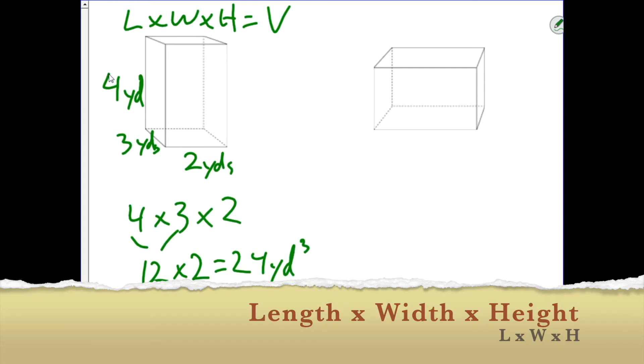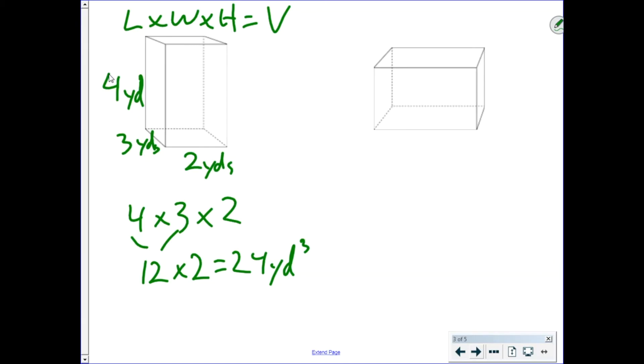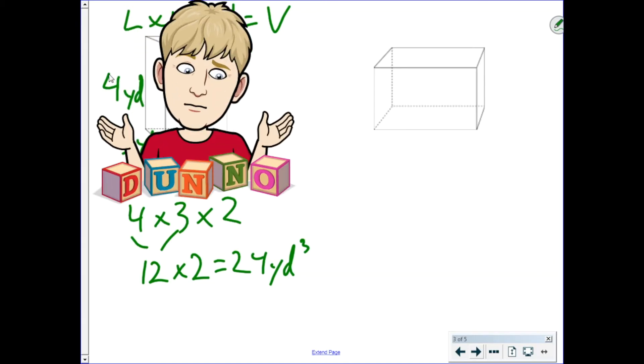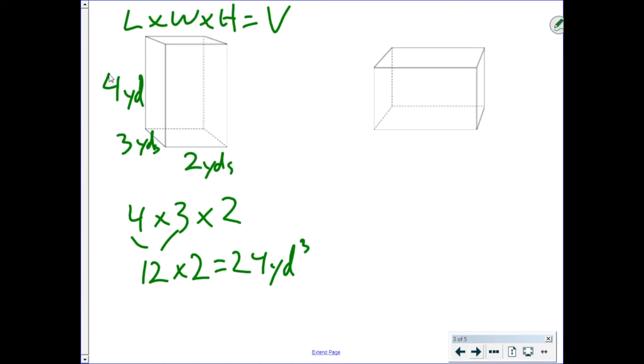So if they give you the side lengths, you multiply. But what were to happen if they gave you the volume, but you're missing a side length? So for example, if the volume here was 144 cubic feet, and they gave you the height as two feet, and the depth as six feet, what would the width be?